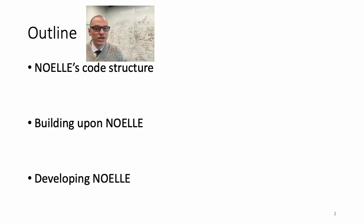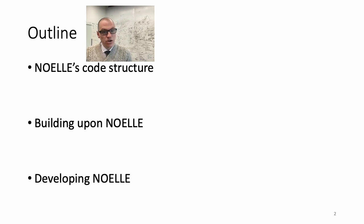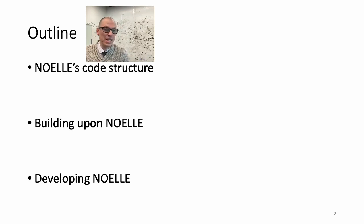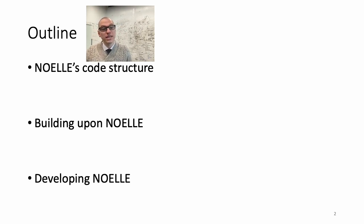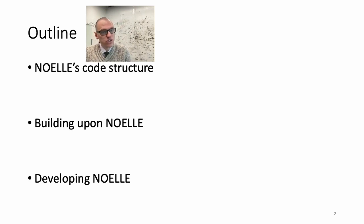This talk is organized in three parts. After describing the code structure of NOEL, we'll look at how to build a simple code analysis and transformation using NOEL. Then we're going to look at how to develop inside NOEL — for example, if you want to extend an abstraction already provided by NOEL, or to add a new abstraction.